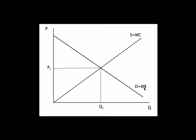Our demand curve is the marginal benefit curve, because it's the willingness to pay for any additional unit of this good — in other words, how much benefit people are getting in terms of their willingness to pay for one additional unit. By going to equilibrium, we are producing all the units where marginal benefit is above marginal cost, so we're maximizing total surplus. In other words, it's efficient — consumer surplus, producer surplus — there's no way to improve on this outcome in terms of total surplus.